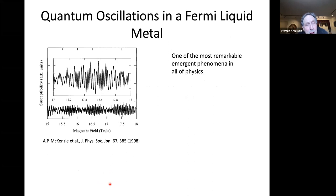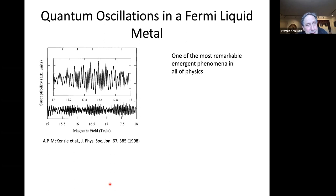Here's the susceptibility — the derivative of the magnetization with respect to magnetic field — of some metal at low temperature. This is characteristic of what's seen in clean metals. One can see hundreds, even thousands of oscillations of the magnetization as a function of magnetic field. The frequencies and amplitudes of these oscillations depend on the orientation of the field. It's incredibly rich and incredibly unintuitive.